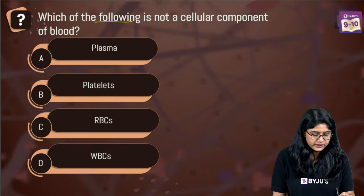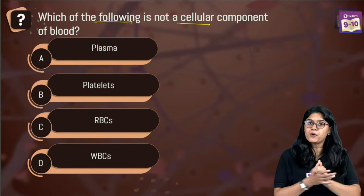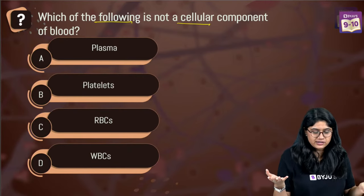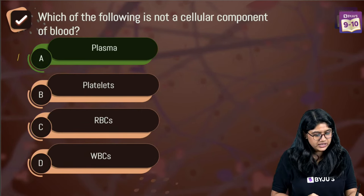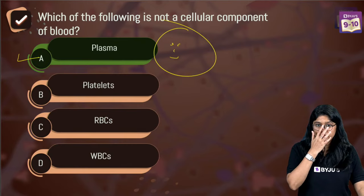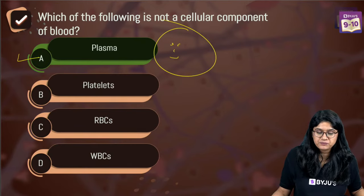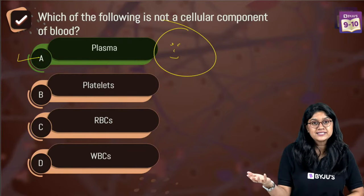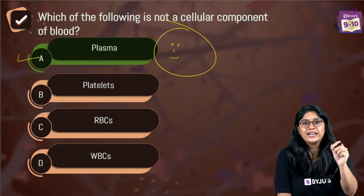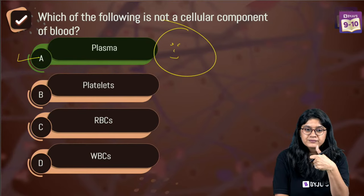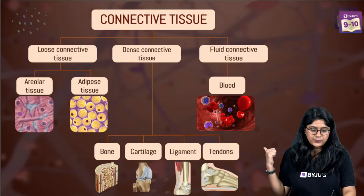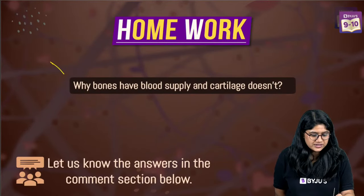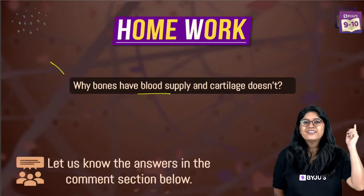Last question for all of us: which of the following is not a cellular component of the blood? In blood we have two components - cellular (cells) and non-cellular (fluid). Plasma is the non-cellular component, so plasma is the answer. We are done with our today's session. Here's a homework question: why does bone have blood supply but cartilage doesn't? Write the answer in the comment section below.